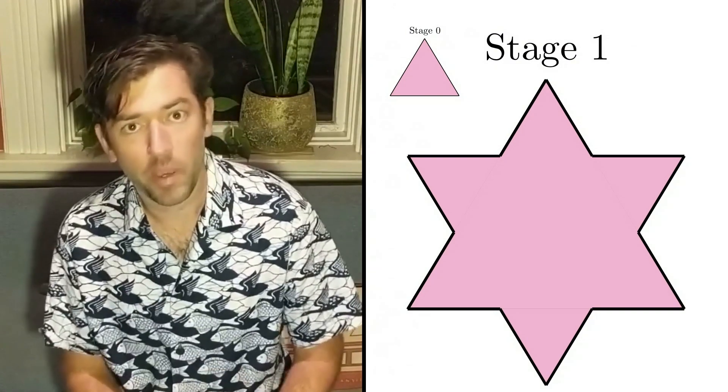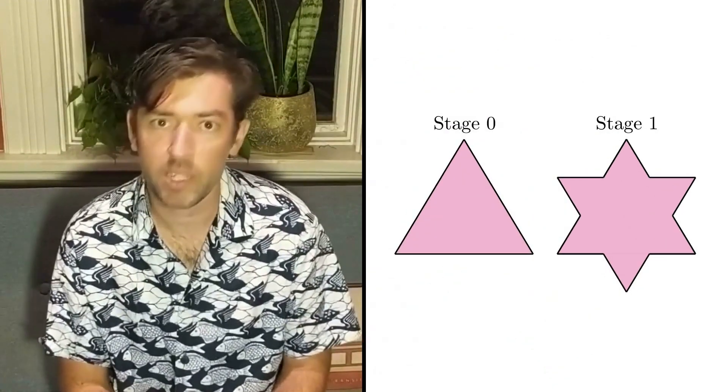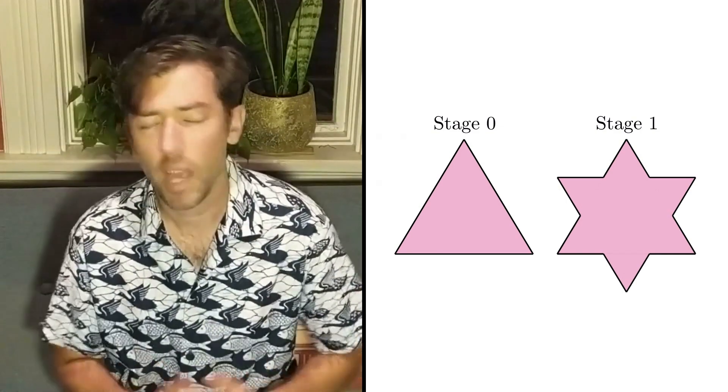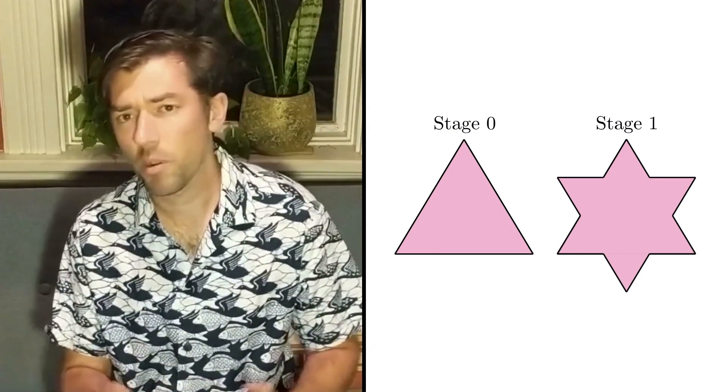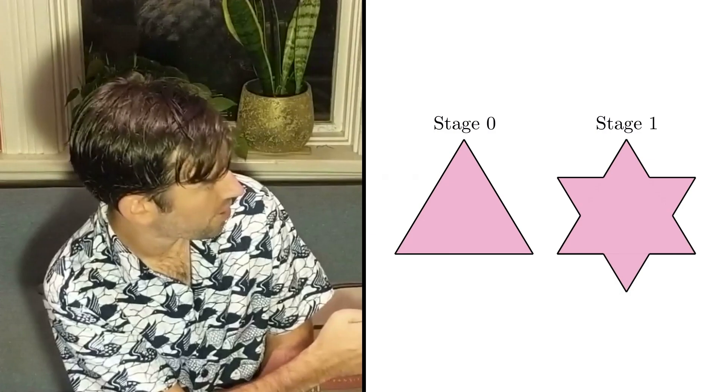So, here are some questions for you to think about. If you do the same process again, what do you think the shape will look like when you get to stage two? How many triangles will you add? How many sides will the new shape have? Okay, that's probably enough to think about for now, so let's send it back to you, Professor von Snowinghausen.